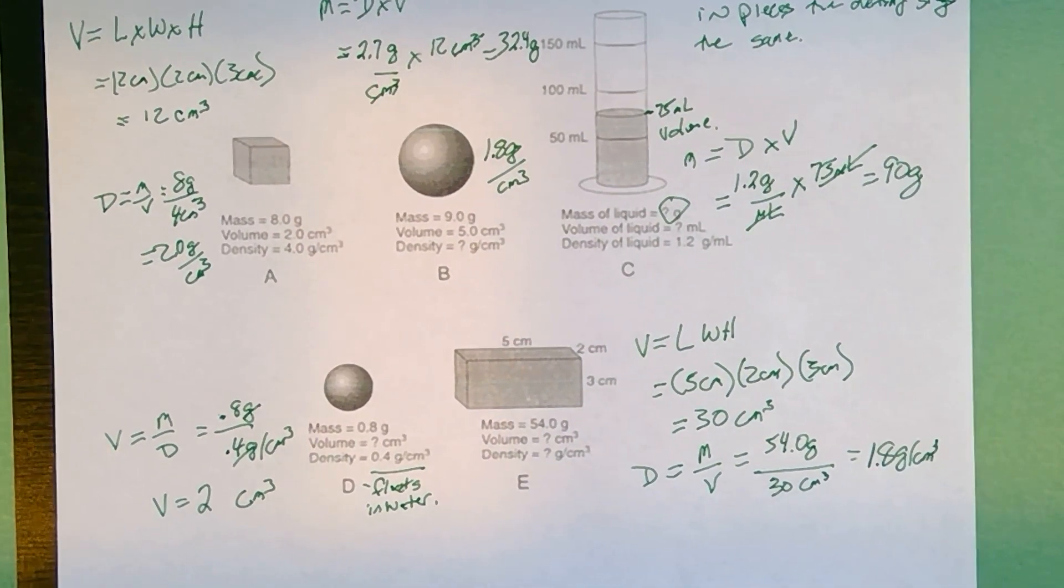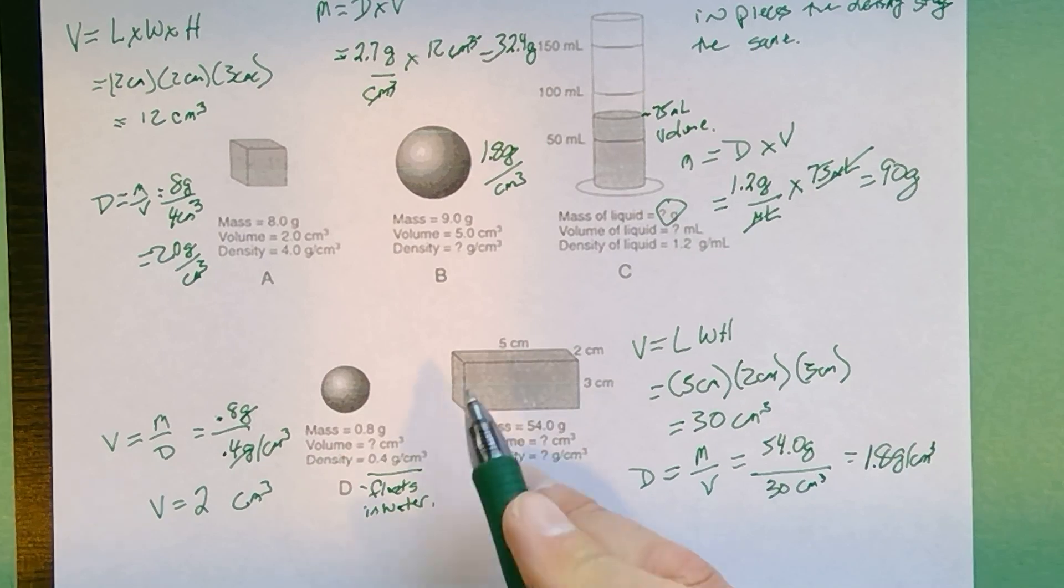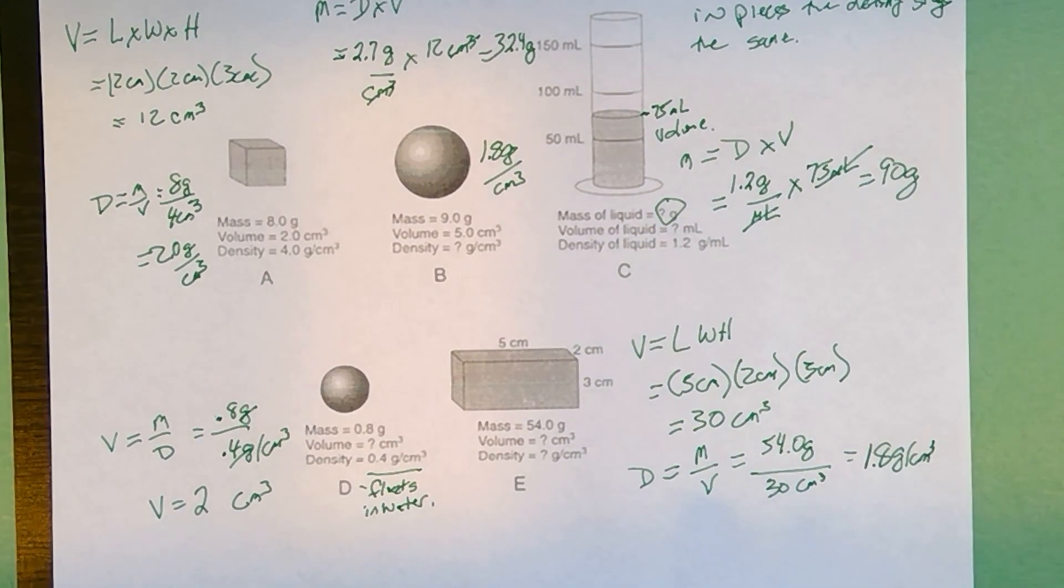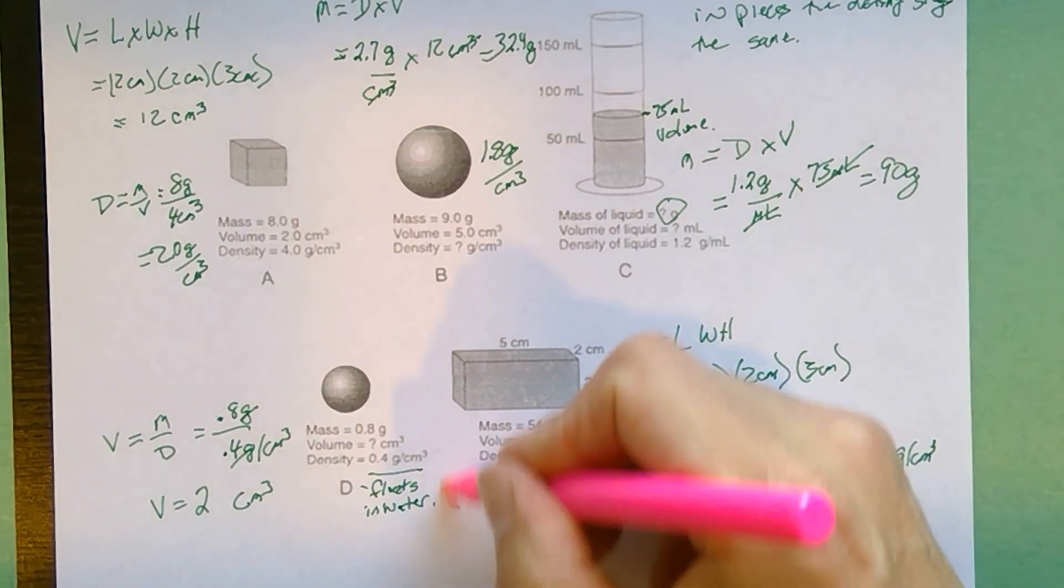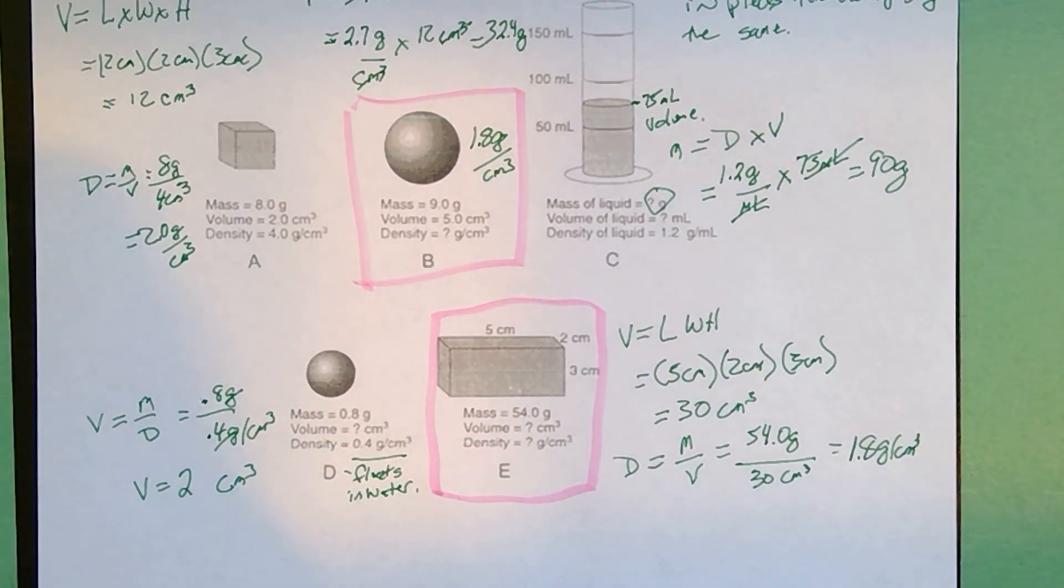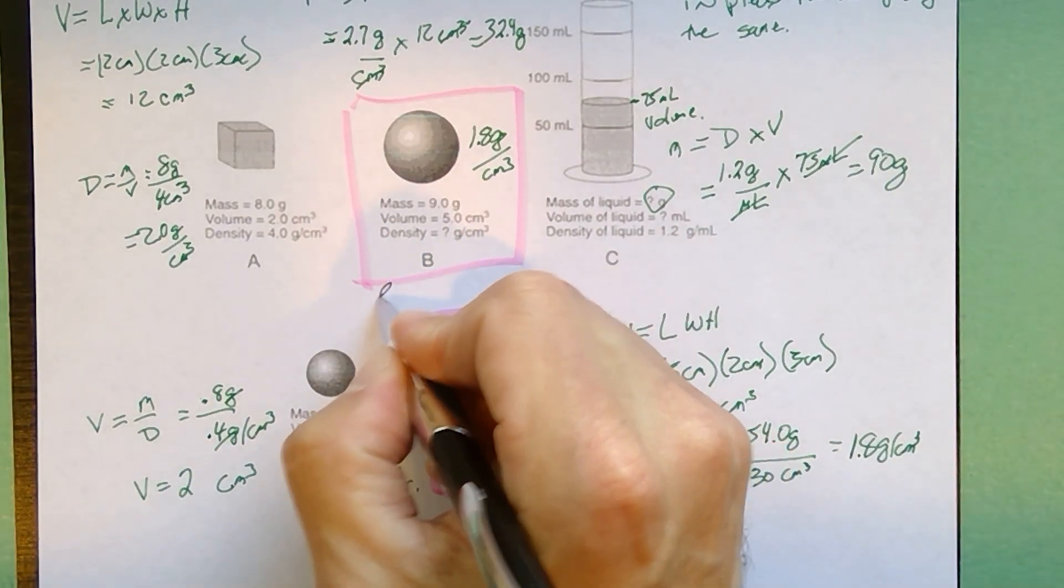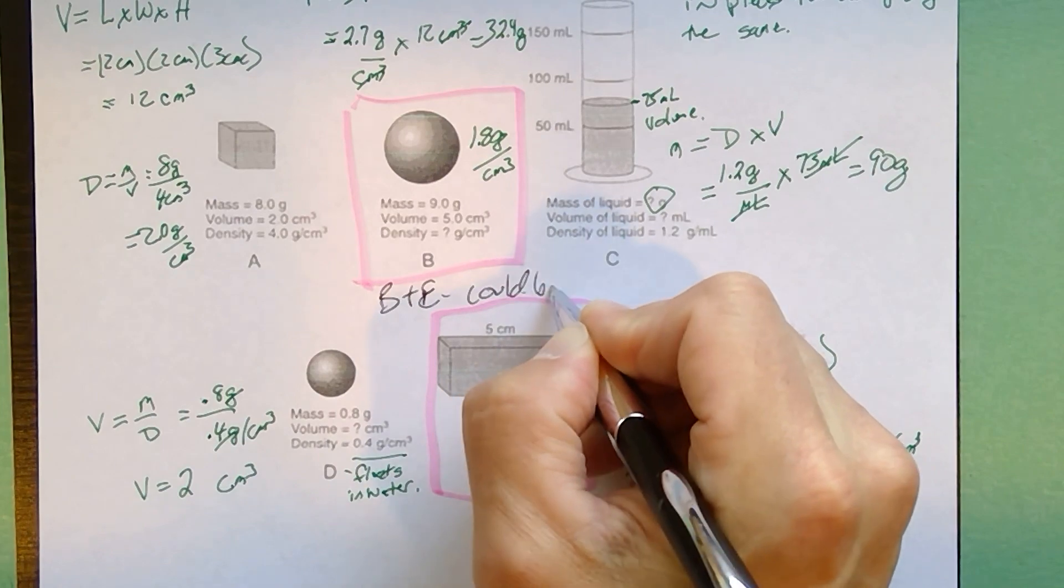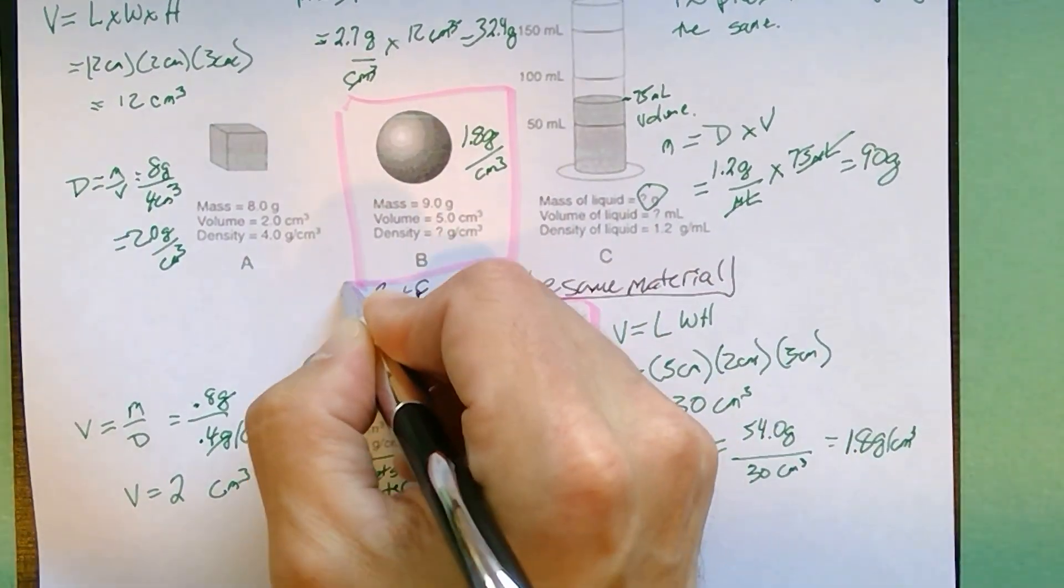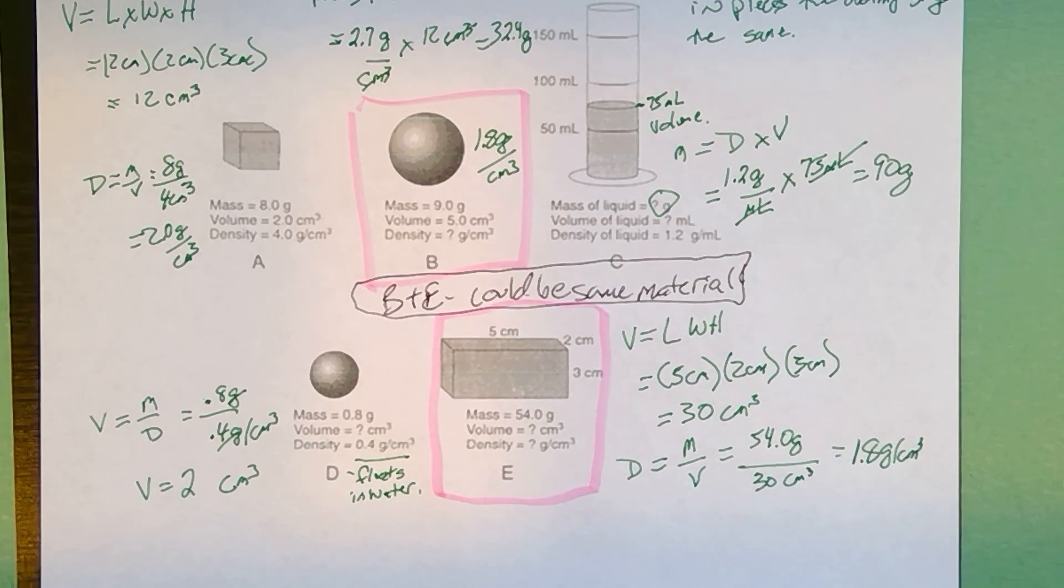Now looking at these objects, you'll notice that object E and object B, even though they're different shapes, they're different sizes, they have significantly different volumes. This one's 6 times the volume, but it's also 6 times the mass. So if you're looking at this, when you look at these two, what you'll notice is E over here and B over there have the same density. So what you might infer is that B and E could be the same material. How do we know that they could be the same material? Because the same material should have the same uniform density.